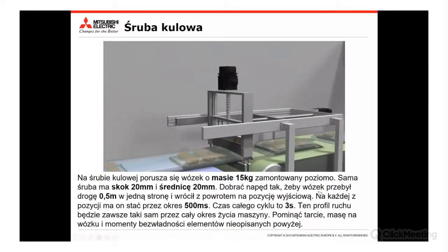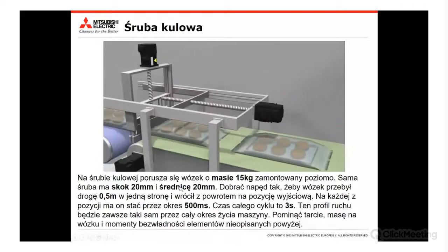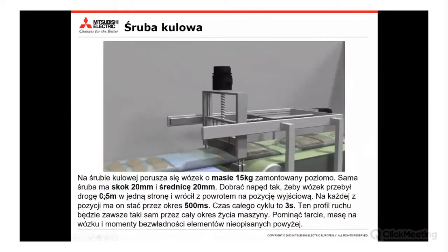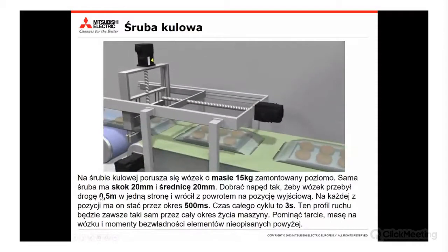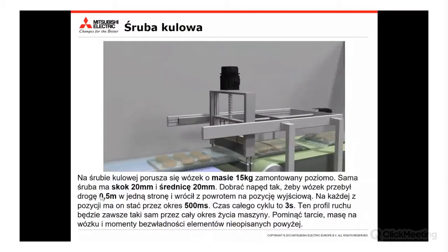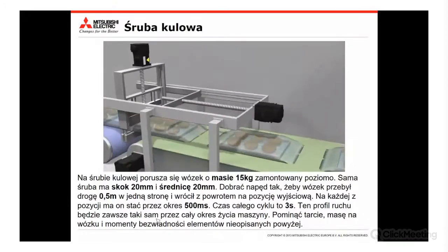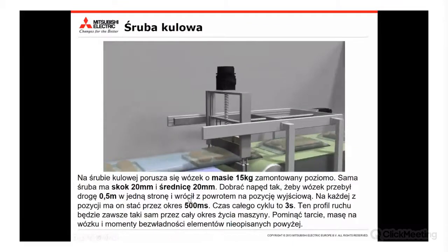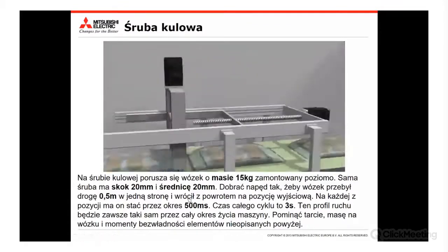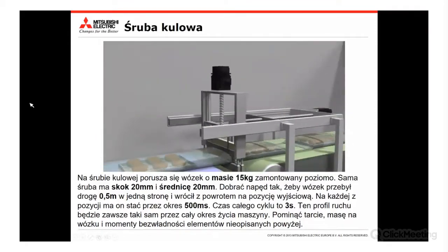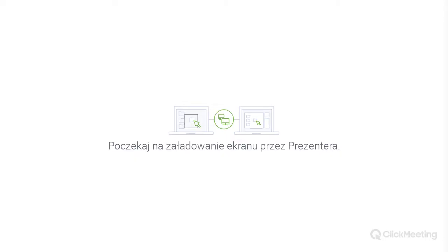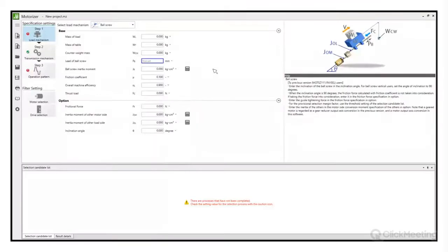Zadanie: dobrać napęd tak, aby przejechał drogę pół metra w jedną stronę i wrócił do pozycji wyjściowej. Na każdej pozycji układ powinien stać przez 500 milisekund, a czas całego cyklu powinien wynieść 3 sekundy. Zakładamy, że profil ruchu jest zawsze taki sam przez cały okres życia maszyny. Pomijamy tarcie, masę na wózku i momenty bezwładności nieopisanych elementów. Przejdźmy do oprogramowania i skupmy się na wypełnieniu danych.